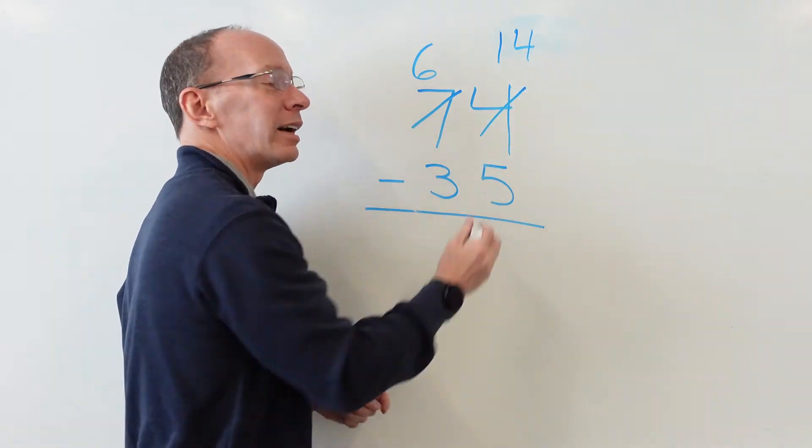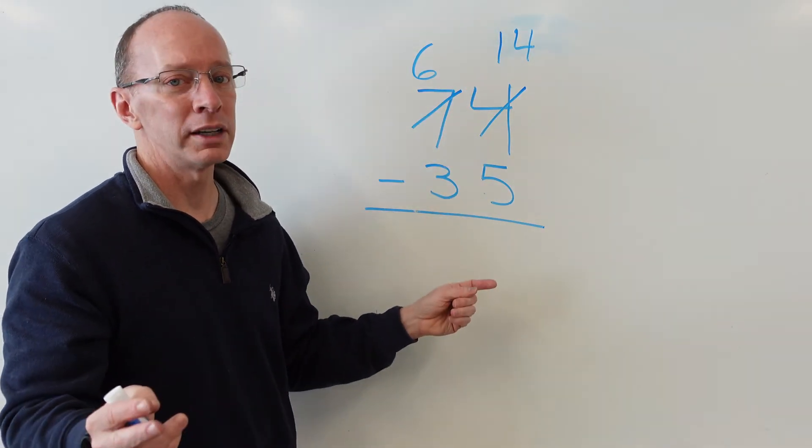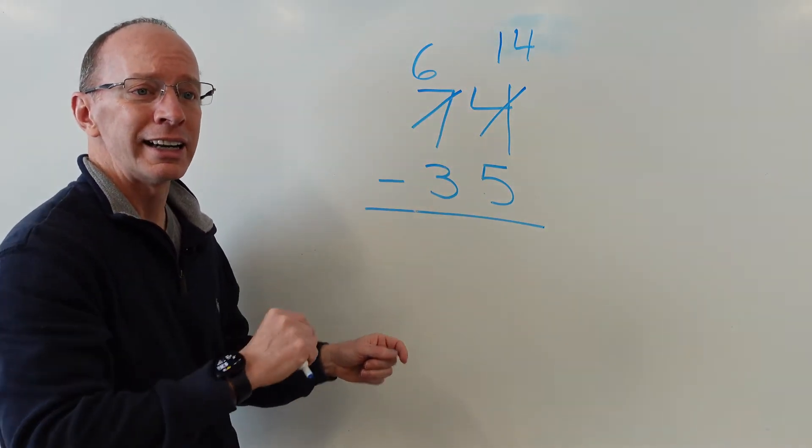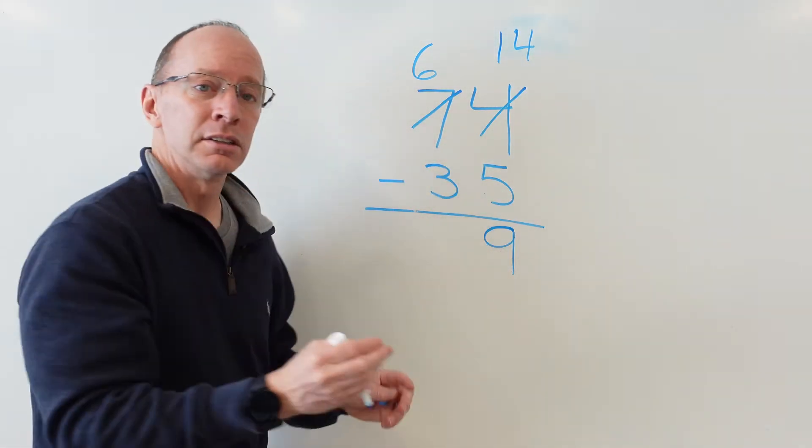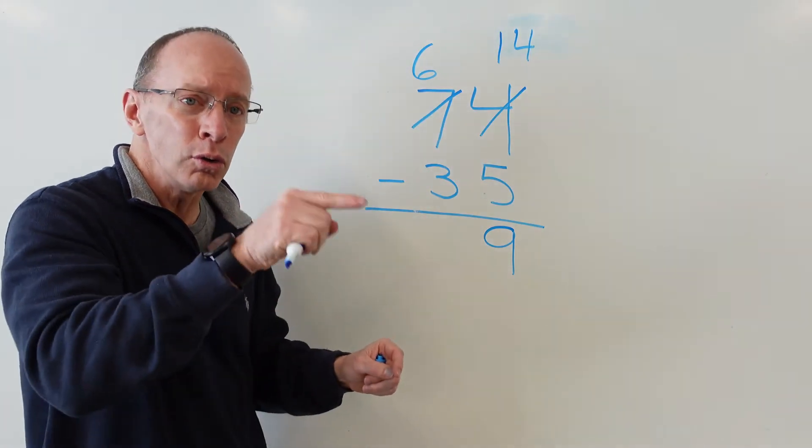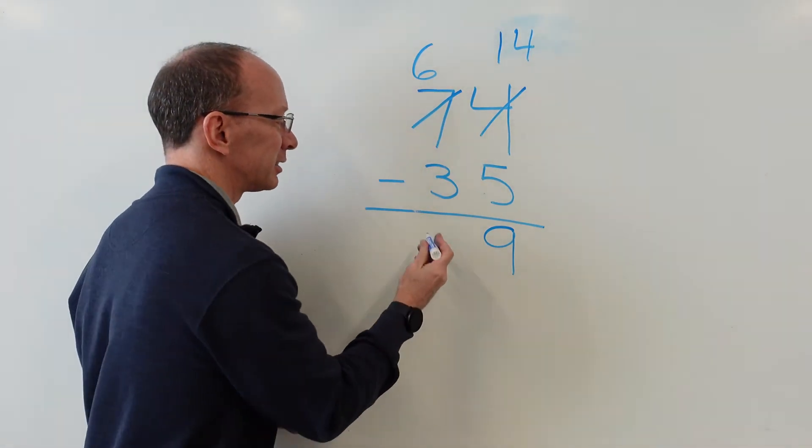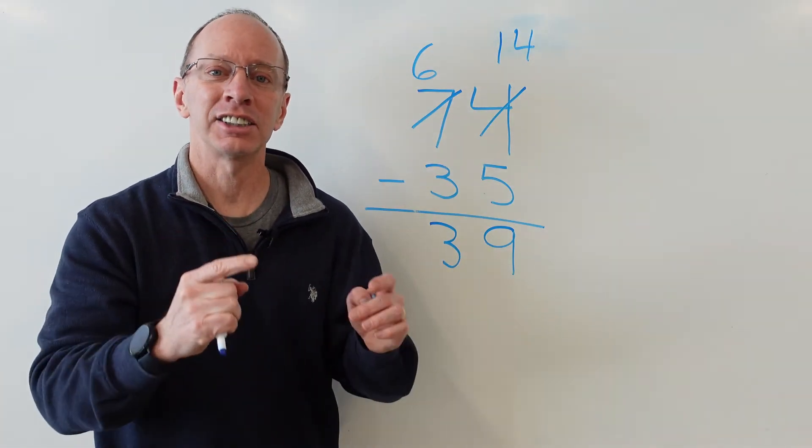I put the line through the 4 and now I can subtract. 14 minus 5, what is it? Yeah, you're right, 9. So I put the 9 right here. Subtract the tens: 6 minus 3. Uno, dos, tres. Yes. Muy bien, muy bien. Excelente, fantastico. You did a very good job.